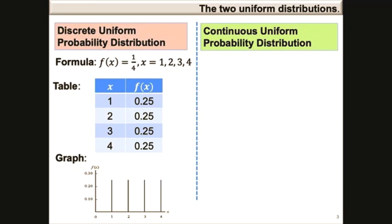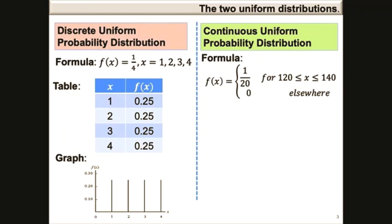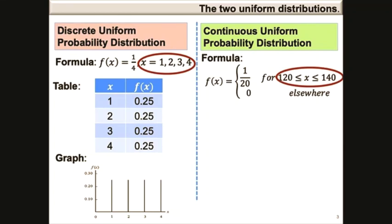For the continuous probability distribution, the probability density function is also a constant, and it's defined for x values within an interval where a lower boundary and an upper boundary are provided. In this example, the lower boundary is 120 and the upper boundary is 140. For any other x values, the probability function is 0. For the continuous uniform, the x values fall within an interval, and therefore an infinite number of x values can be observed.